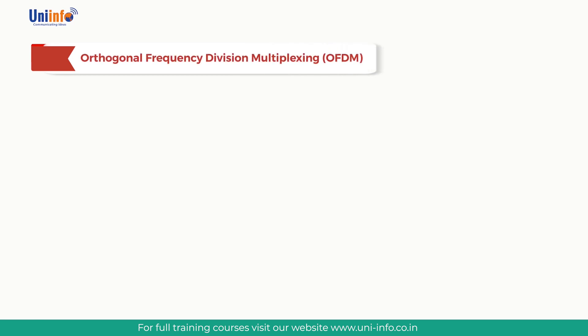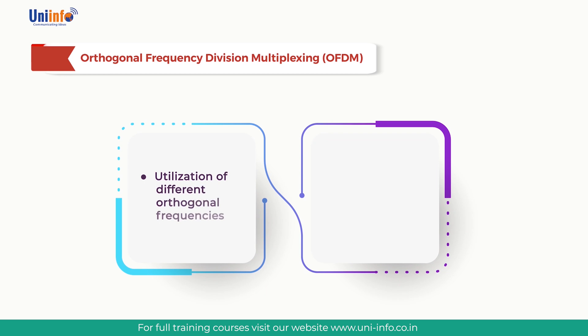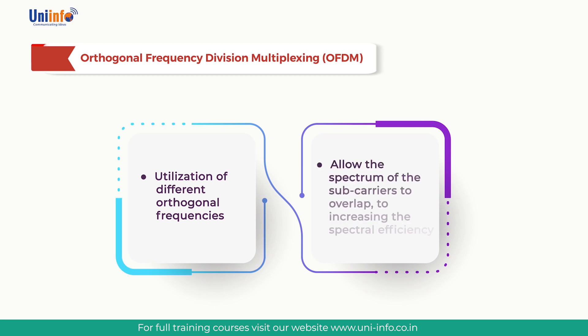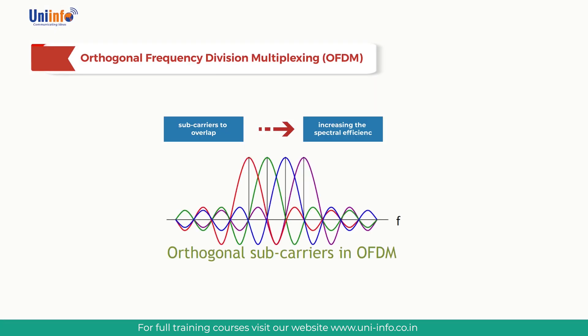Orthogonal Frequency Division Multiplexing, or OFDM, is based on the utilization of different orthogonal frequency subcarriers. The use of orthogonal subcarriers allows the spectrums of the subcarriers to overlap, thus increasing spectral efficiency. This overlapping is done such that the maximum of the next carrier is placed just on top of the first null point of the previous carrier — when this happens, the two signals are orthogonal. If the dot product of two signals is equal to zero, these signals are said to be orthogonal — that is, they are uncorrelated. As long as orthogonality is maintained, it is still possible to remove the individual subcarriers despite their overlapping spectrums.